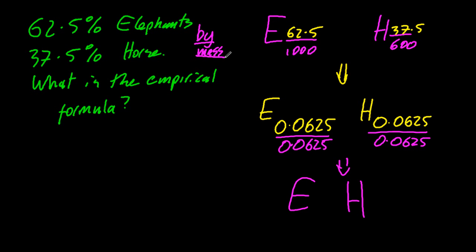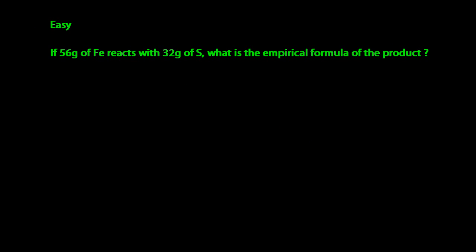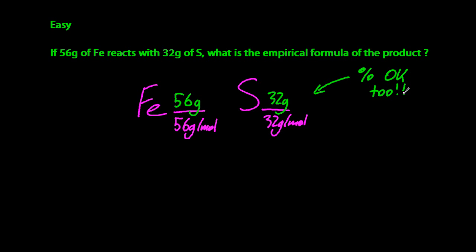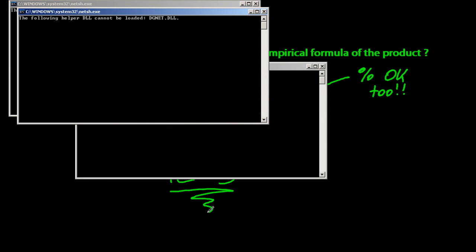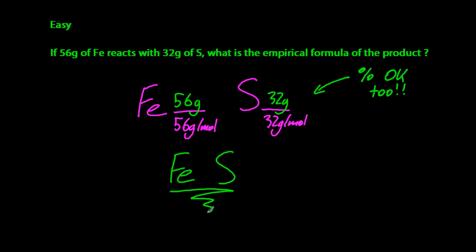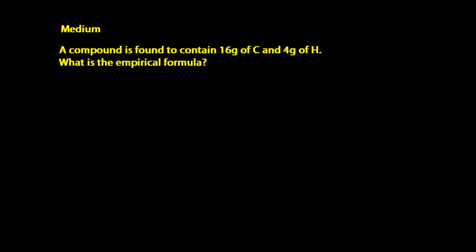Right, well let's look at a chemistry example. So the simplest one we can do is 56 grams of iron, 32 grams of sulfur. So we put the molar mass at the bottom of the fraction, and the mass involved at the top. Now like before, you could put percentage masses, it still gives you the same. When we calculate that, that's a one-to-one ratio. So there's one iron atom for one sulfur.